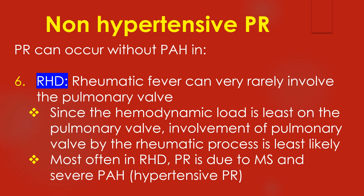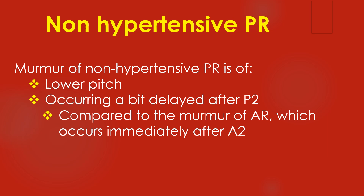Since the hemodynamic load is least on the pulmonary valve, involvement of the pulmonary valve by the rheumatic process is least likely. Most often in rheumatic heart disease, PR is due to mitral stenosis and severe pulmonary hypertension.